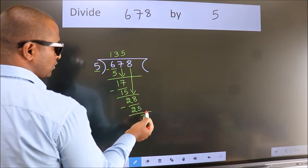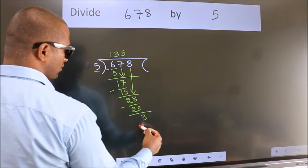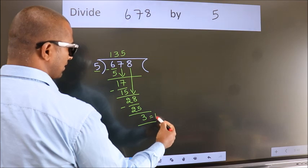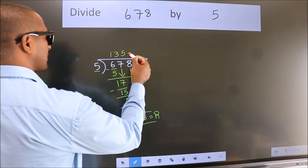No more numbers to bring it down. So, we stop here. This is our remainder. This is our quotient.